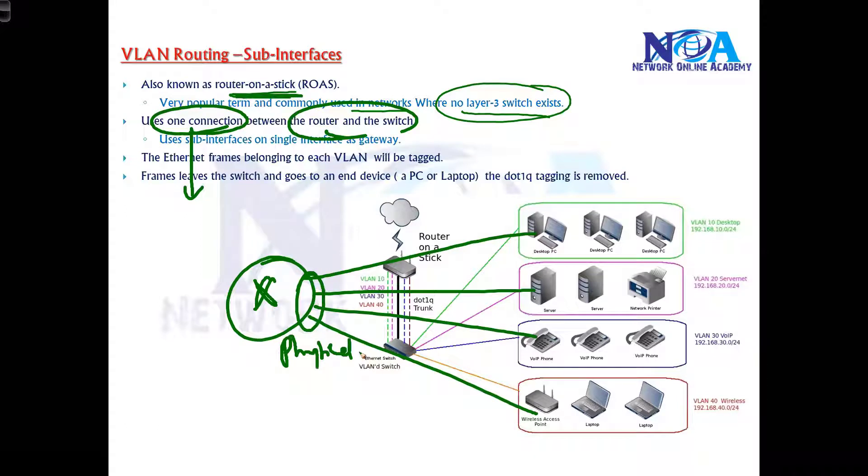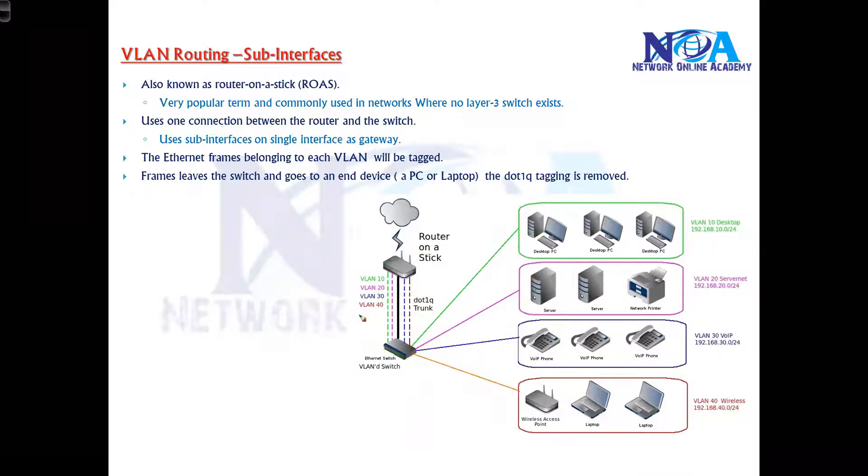But we are not doing like that here. So here when we connect multiple VLANs we'll be using only one interface, which goes and connects to the switch, and then from there it connects to end users. So we'll be using only one interface here, let's say F0/0.